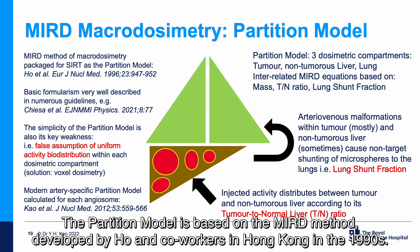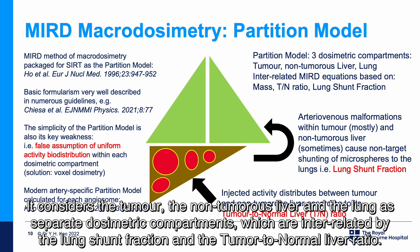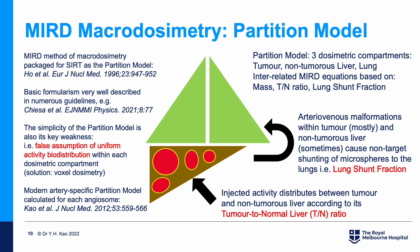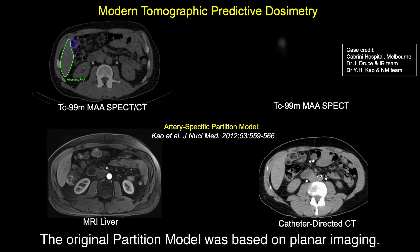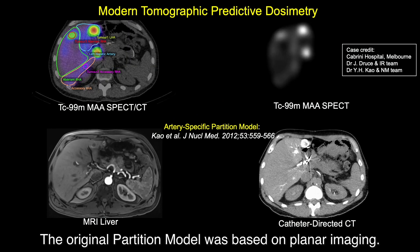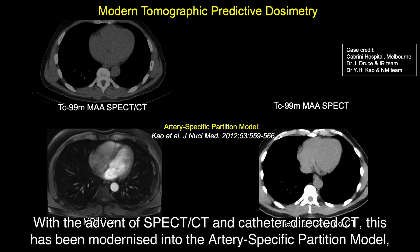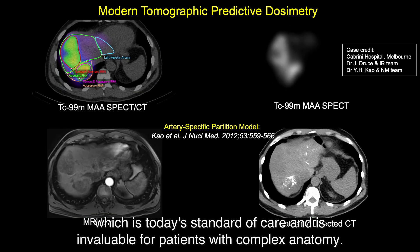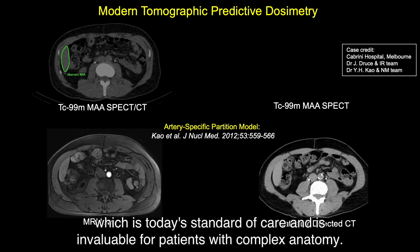The partition model is based on the MIRD method, developed by Ho and co-workers in Hong Kong in the 1990s. It considers the tumour, the non-tumorous liver, and the lung as separate dosimetric compartments, which are interrelated by the lung shunt fraction and the tumour-to-normal liver ratio. However, the main weakness of the partition model is its assumption of uniform activity distribution, which is a false assumption. With the advent of SPECT-CT and catheter-directed CT, the original planar-imaging-based partition model has been modernized into the artery-specific partition model, which is today's standard of care and is invaluable for patients with complex anatomy.